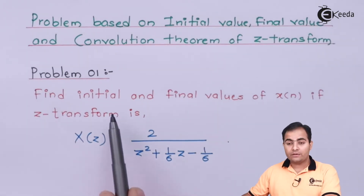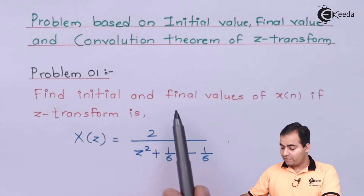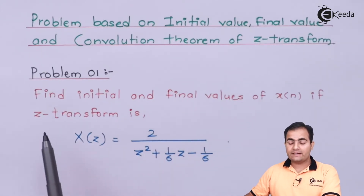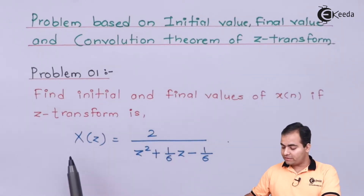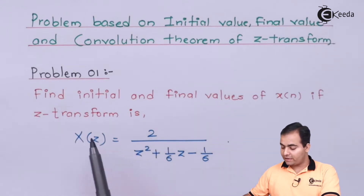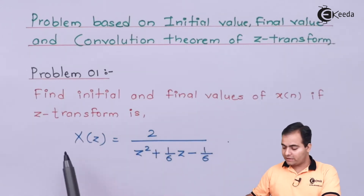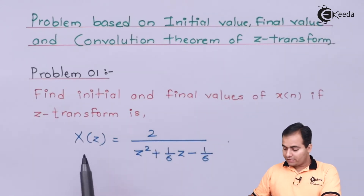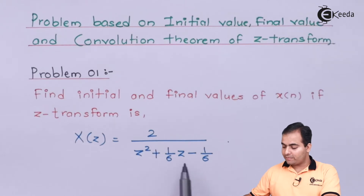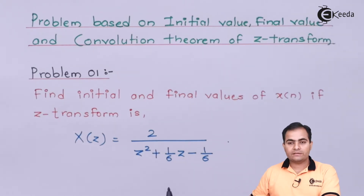Find the initial value and final value of X(n) if the Z-transform is given. The Z-transform of X(n) is: X(Z) = 2 / (Z² + (1/6)Z − 1/6).